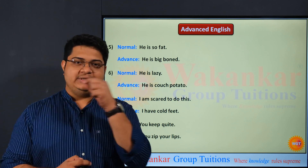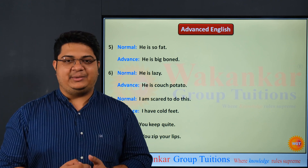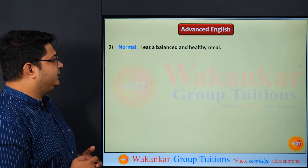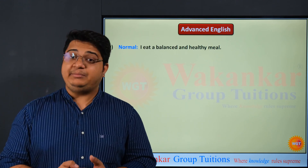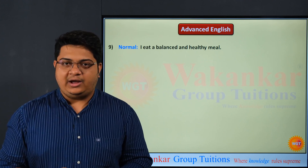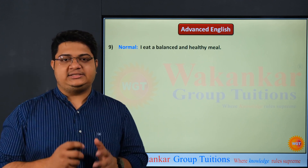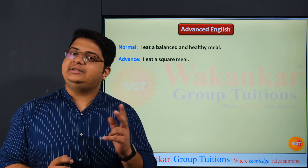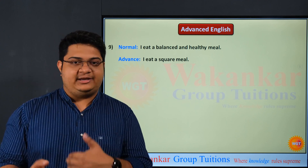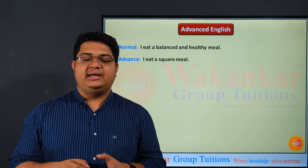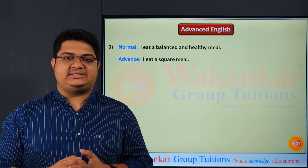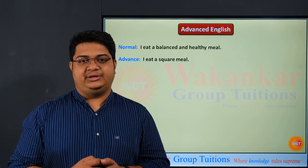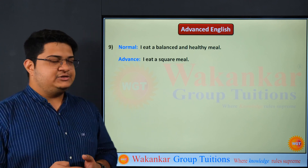So 'zip your lips' is another statement for keeping quiet. Let's deal with another example: 'I ate a balanced and healthy meal.' To shorten this, we can say 'I eat a square meal,' which certainly means I eat a balanced diet or balanced meal. 'I eat a square meal' is an advanced statement that can impress your colleague or friend.